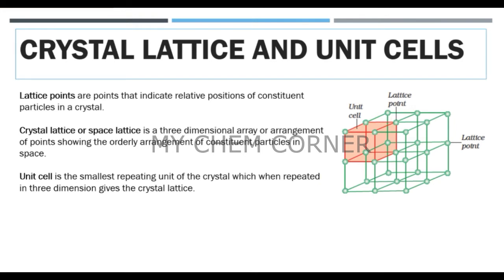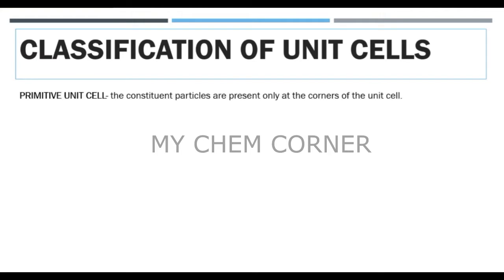Now let's move on to the classification of unit cells. When you look at a normal unit cell which is basically a simple cube, such a unit cell is called a primitive unit cell. The constituent particles present only at the corners of the unit cell or the corners of the cube define a primitive unit cell, which you can also just call a simple cube.